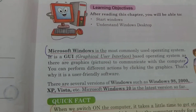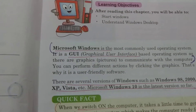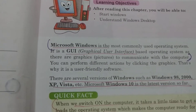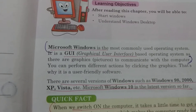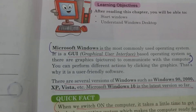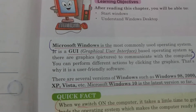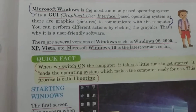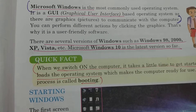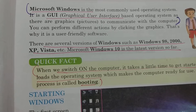Microsoft Windows is the most commonly used operating system. You know that a computer cannot function without the operating system, and Microsoft Windows is the most commonly used OS, that is operating system. It is a type of graphical user interface — not character-based but graphical user interface. There are several versions of Windows such as Windows 98, 2000, Windows XP, Windows Vista, and Microsoft Windows 10 is the latest version till date.